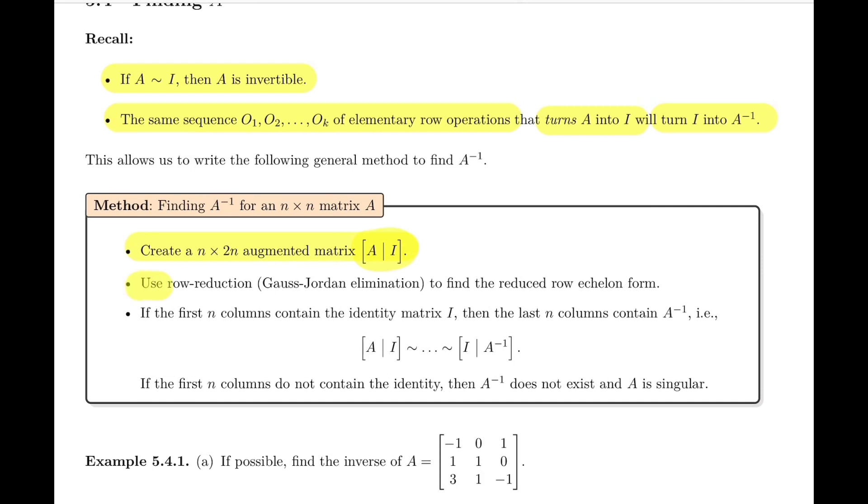We're then going to use the Gauss-Jordan algorithm, or row reduction, to find the RREF, the reduced row echelon form - not just REF, but reduced row echelon form of that matrix.